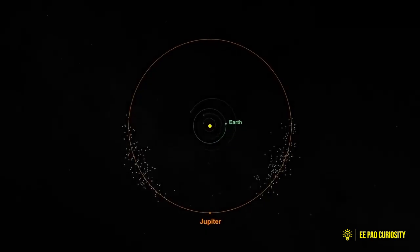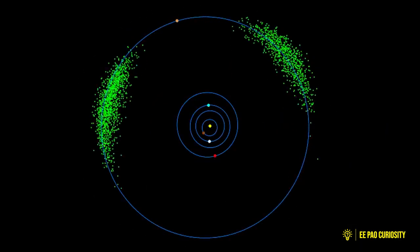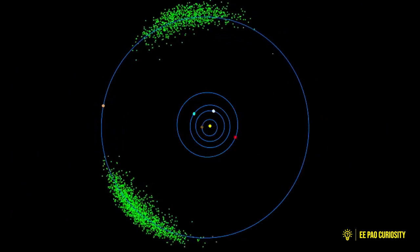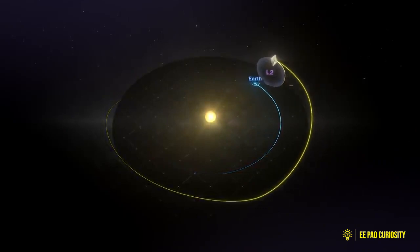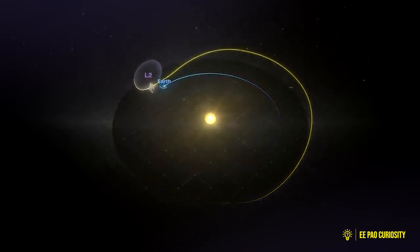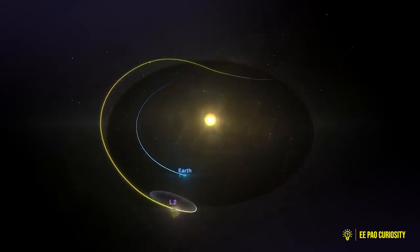The Sun-Earth system has five such Lagrange points. Amongst the five, L1 is such a point which is nearest from the Earth towards the Sun, and any satellite placed in Lagrange point can orbit the Sun at the same speed as Earth, staying in the same place relative to both of them.